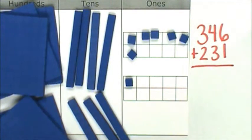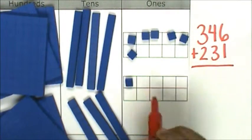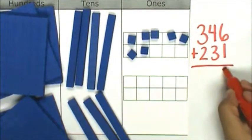Now, I will join my ones. 6 ones and 1 one is 7 ones.